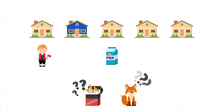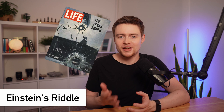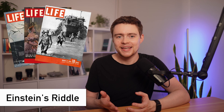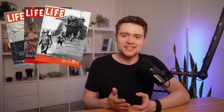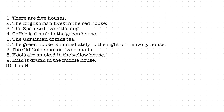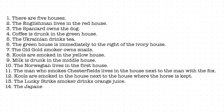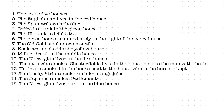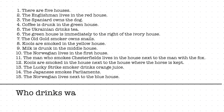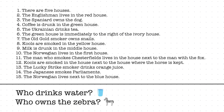These are the first few clues from the famous logic puzzle known as Einstein's Riddle, originally published in Life International magazine in December 1962. The original puzzle presented 15 clues in total, ultimately asking two key questions: who drinks water, and who owns the zebra?